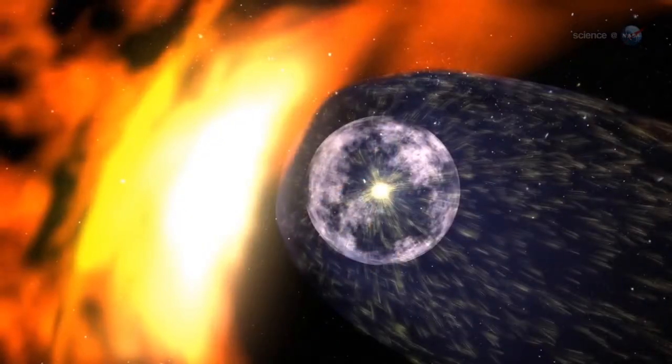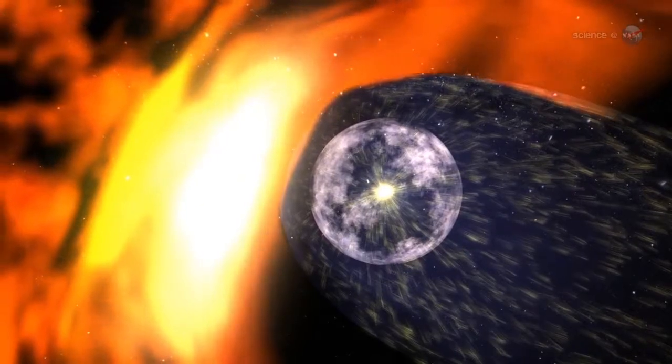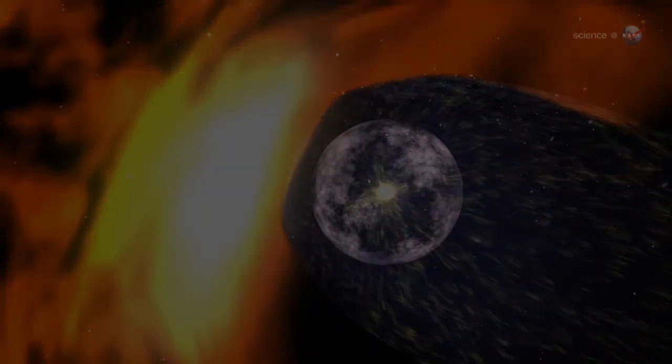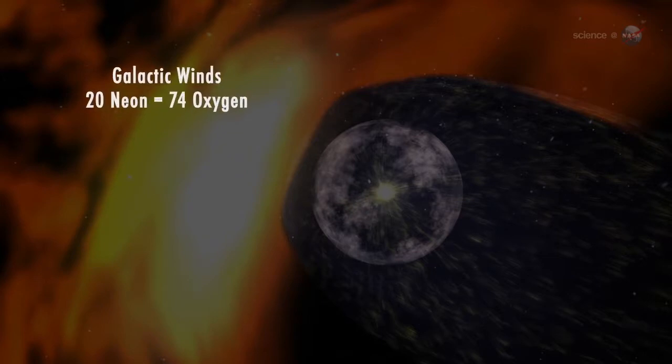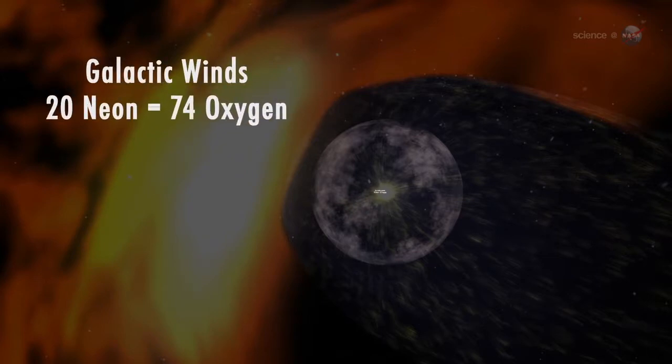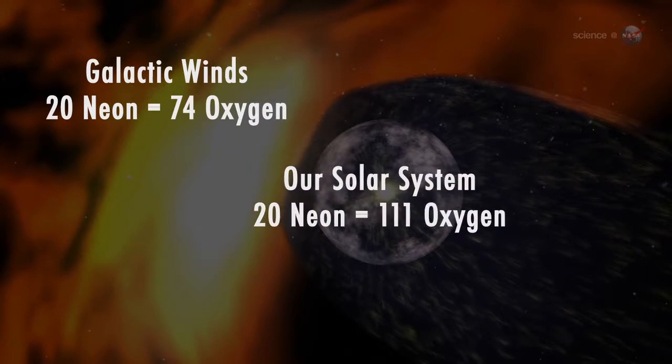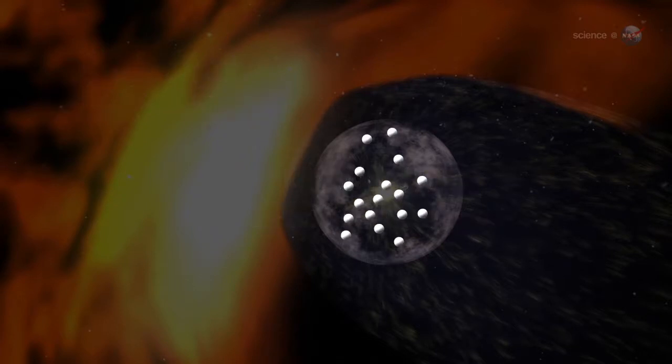In a series of six science papers appearing in the Astrophysical Journal, the IBEX team reported that for every 20 neon atoms in the galactic wind, there are 74 oxygen atoms. In our own solar system, however, for every 20 neon atoms there are 111 oxygen atoms. That translates to more oxygen in any given slice of the solar system than in local interstellar space.